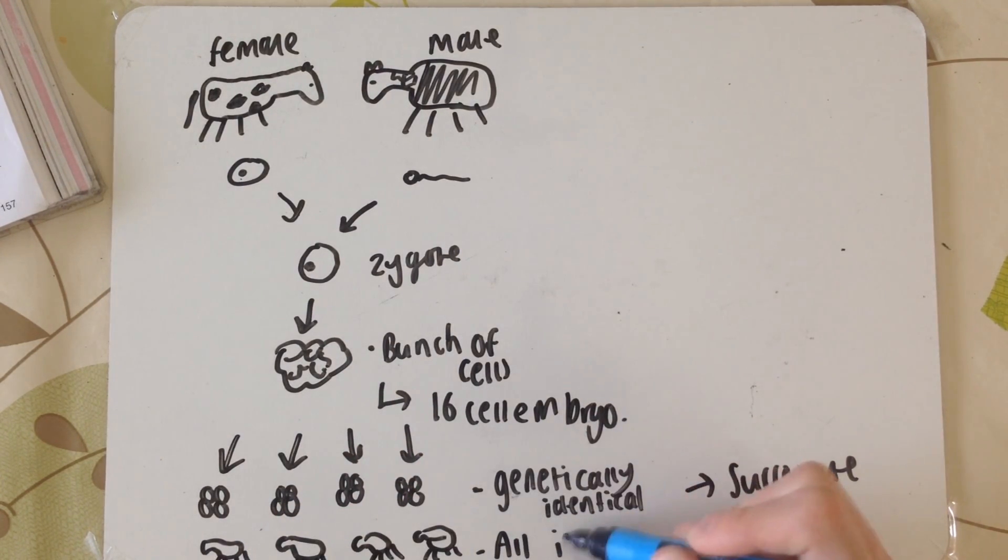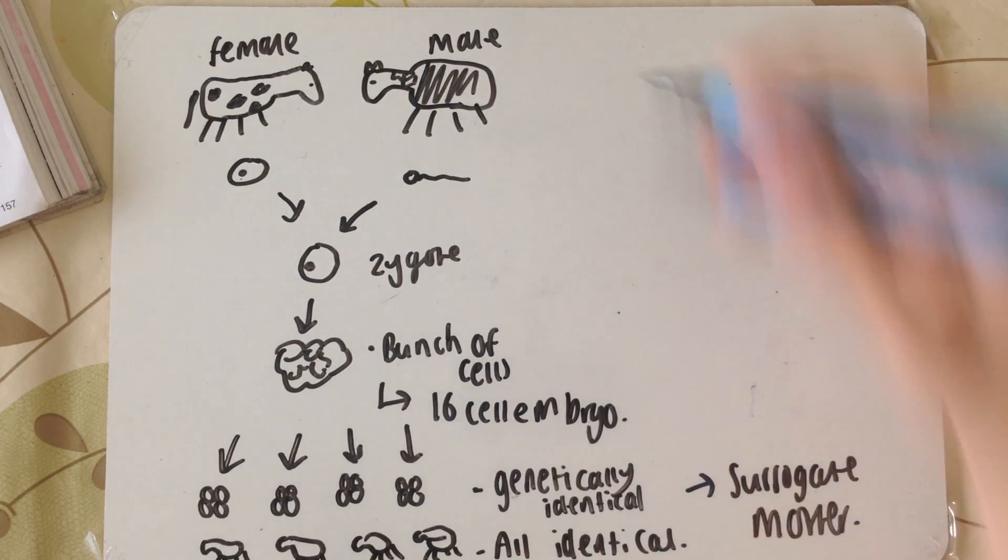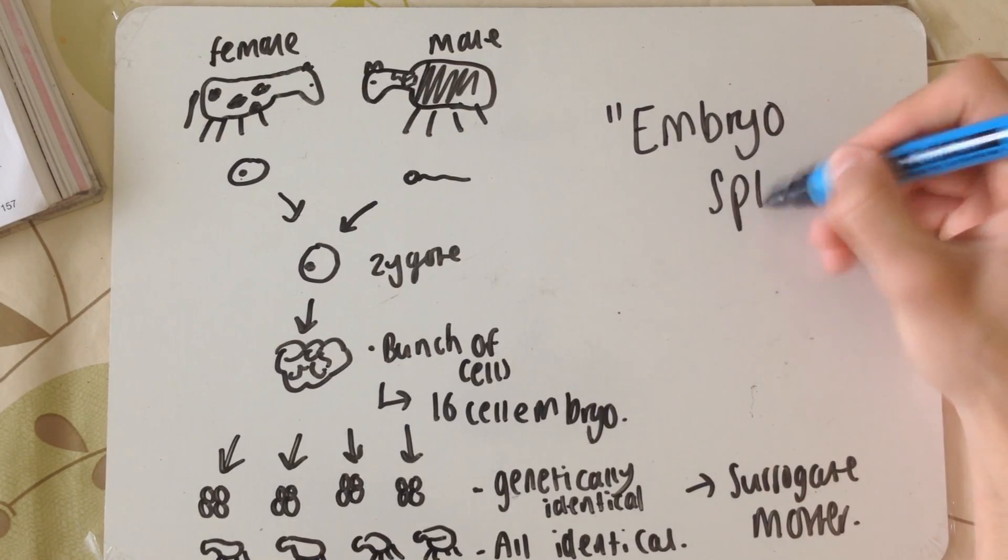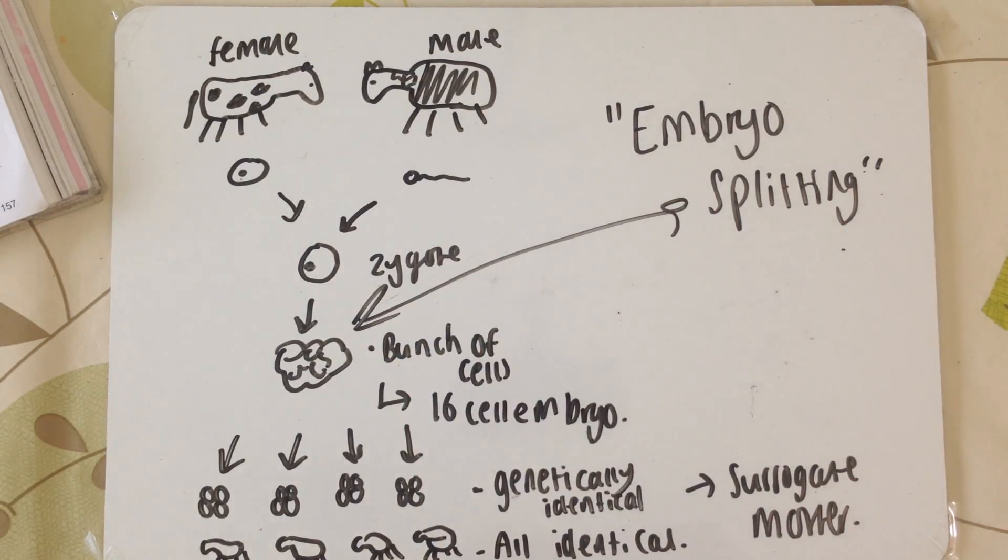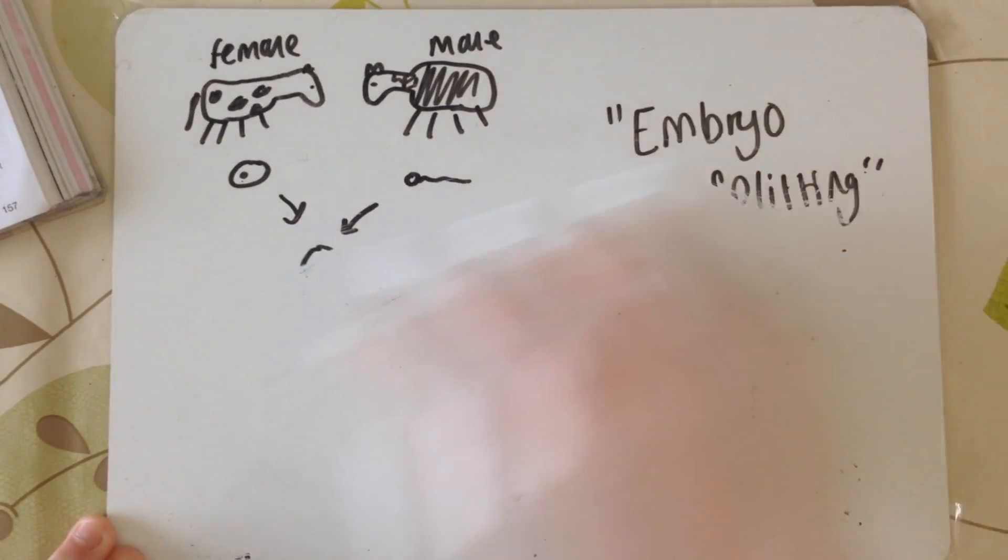These are then placed in surrogate mothers, not one surrogate mother but a different surrogate mother for each clone. The four offspring produced will be twins together, all genetically identical. This is known as embryo splitting because you essentially split an embryo.